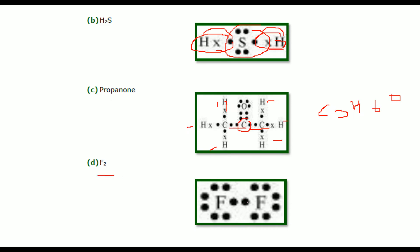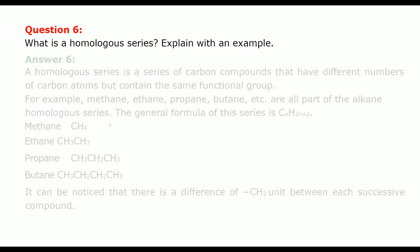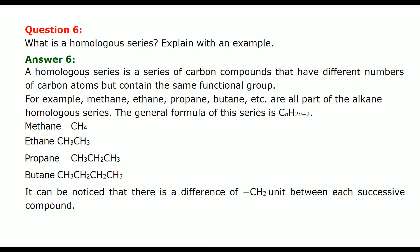F2 fluorine. Fluorine has 7. It want one more. This fluorine has 1. It want one more. So this is how F2 is formed. What is homologous series? Explain with an example.